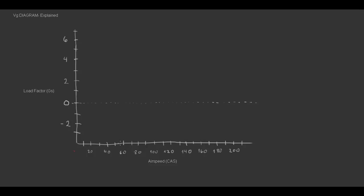A VG diagram compares velocity against load factors, or G's. Therefore, you get V and G, the VG diagram. The first thing we'll put into this VG diagram is the minimum stall speed. And this airplane stalls at 40 knots.